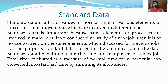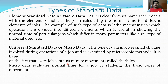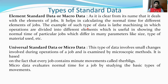We have to take the past data with proper allowances added to it, because the allowance amount is included in the standard time. How many types of standard data are available? The first type is element standard data — it deals with the elements of jobs, helping in calculating the normal time for different elements. An example is rate machining, in which operations are divided into different elements. Element standard data shows the normal time of particular jobs which differ in many parameters like size, type of materials used, etc.